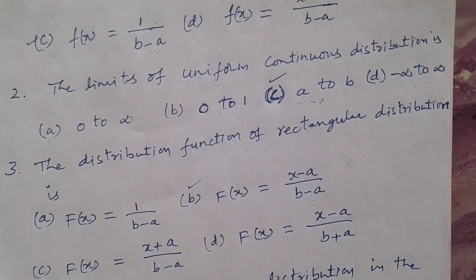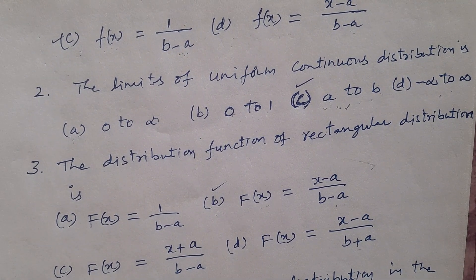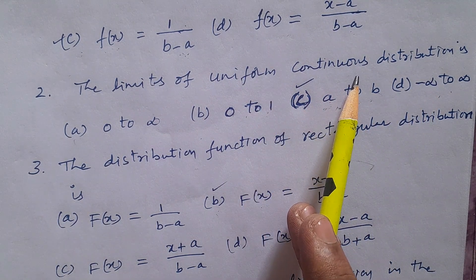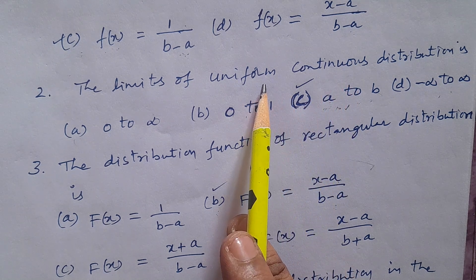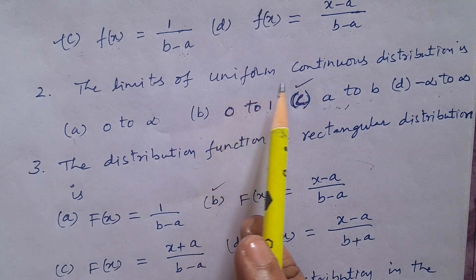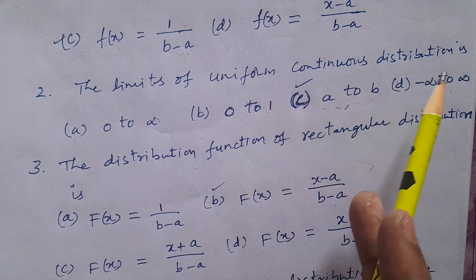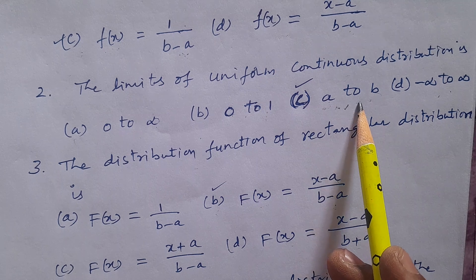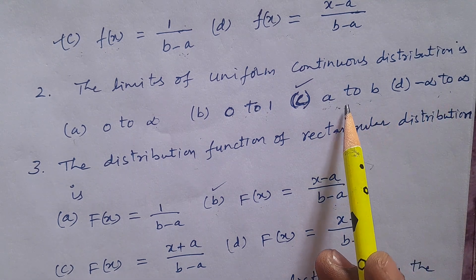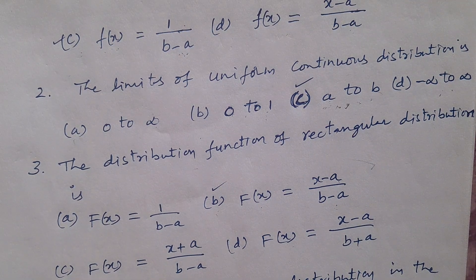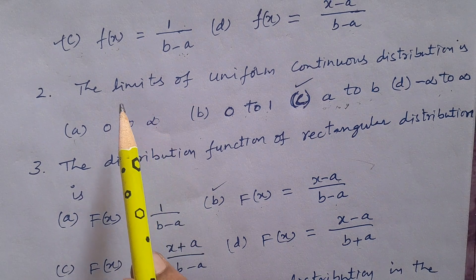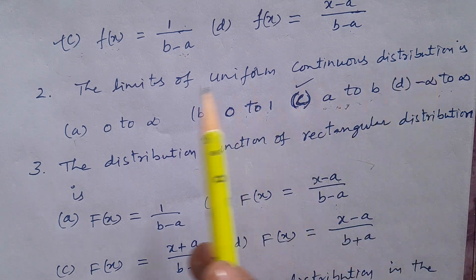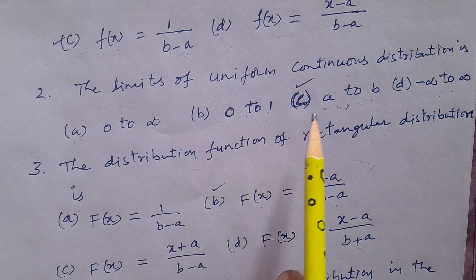Question number 2: The limits of Uniform Continuous Distribution — it was specified as Uniform Continuous Distribution because Uniform Distribution also exists in Discrete Distribution. Options: A. 0 to infinity, B. 0 to 1, C. a to b, D. minus infinity to infinity. Answer is C: a to b.